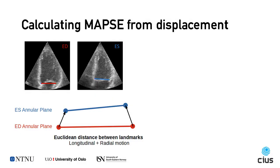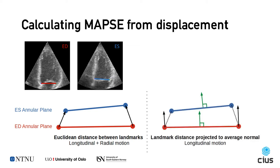Finally, when calculating MAPSE from the landmarks in end-diastole and end-systole, one can simply calculate MAPSE as the distance between these landmarks. However, this would include both longitudinal motion as well as any radial motion. Radial motion can be due to shrinking or enlarging of the annulus, or any global movement of the heart during systole. Anatomically speaking, MAPSE should calculate the movement of the annular plane, and since we are now doing MAPSE in B-mode, it is possible to do this by projecting the landmark distance to the average normal shown in green. By taking the normal of the annular plane in end-diastole and end-systole, we can project the landmark displacements to the average normal using the dot product, and thereby only measure longitudinal motion.